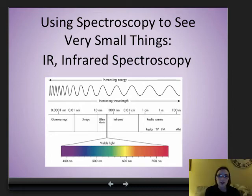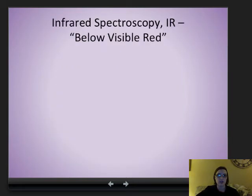Welcome to spectroscopy. In this series of videos, we're talking about the different types of spectroscopy. This video is going to be focused on IR, or infrared spectroscopy. This is just another way to use light or part of the electromagnetic spectrum to see very small things.